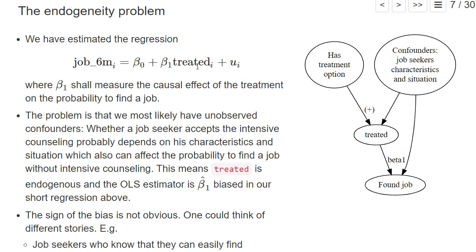Now the problem is that in this regression we most likely have unobserved confounders that lead to a bias in our OLS estimator β₁ hat, and we will not really measure the causal effect of getting intensive job counseling on the probability to find a job.